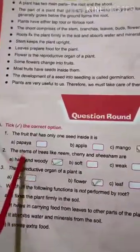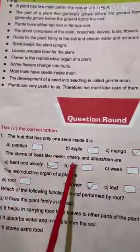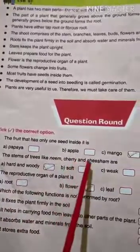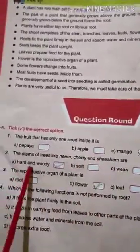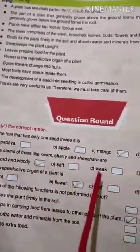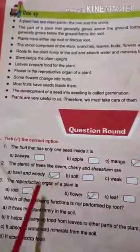Number two: the stems of trees like neem, cherry, and shisham are — hard and woody, soft, weak, or soft and woody. And the answer is hard and woody.